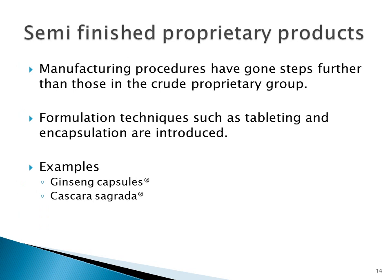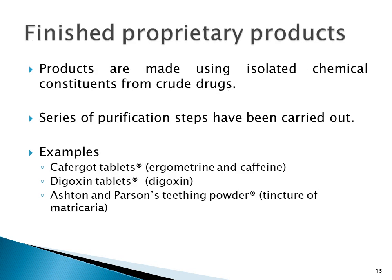For semi-finished proprietary products, the manufacturing steps have gone further than those of the crude group, and formulation techniques such as tableting and encapsulation have been introduced. Examples are ginseng capsules and cascara sagrada capsules. For finished products, the active ingredient has been isolated and purified to get the final product. Examples include Cafergot tablet, which contains ergometrine and caffeine — ergometrine obtained from Claviceps species and caffeine from Coffea arabica. Also, digoxin from Digitalis purpurea, and azulene and persimmon powder, which is a tincture of matricaria.